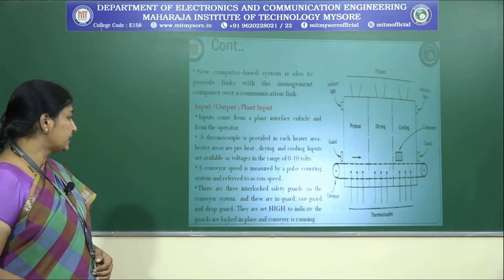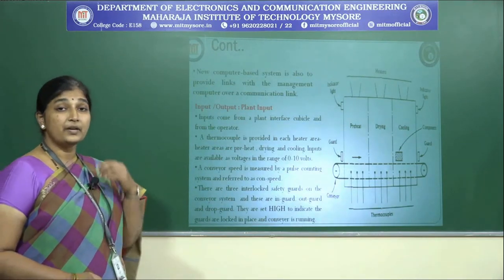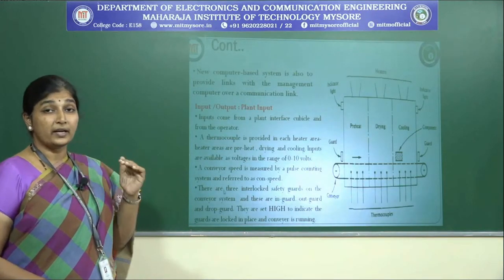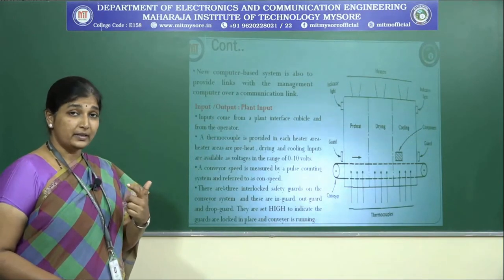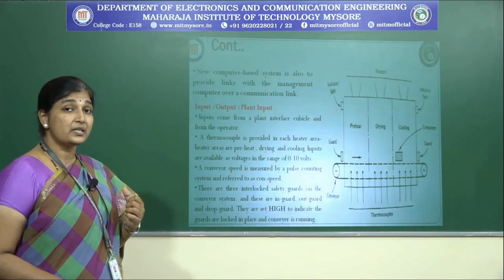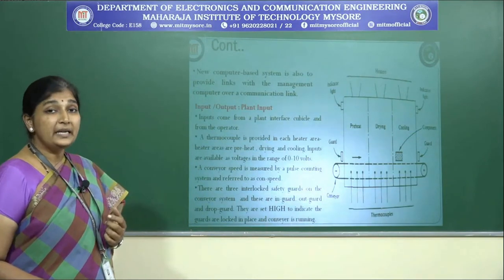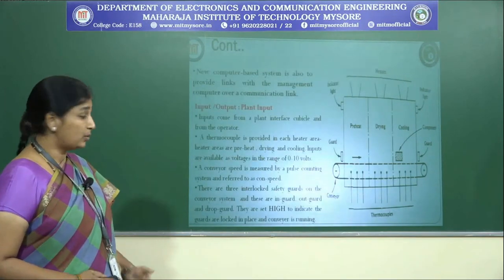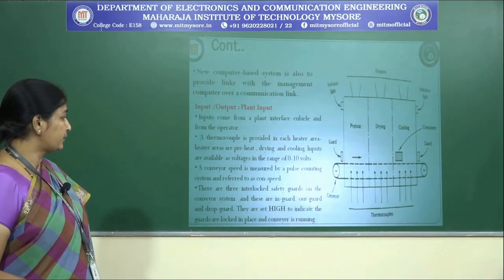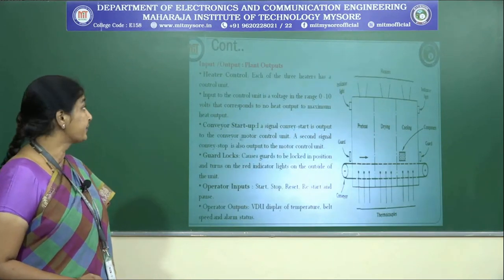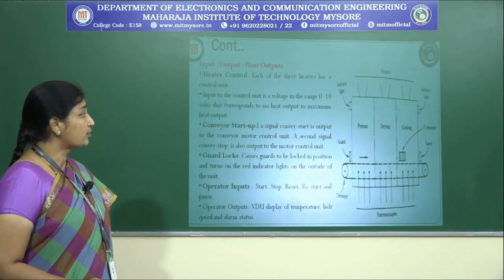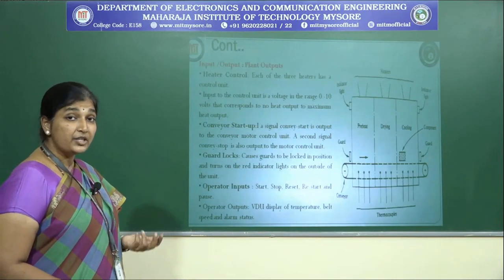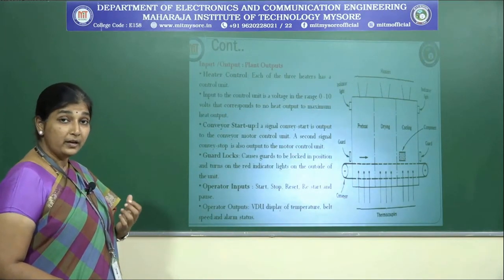The guards are set high to indicate that they are locked, placed, and the conveyor is running. When all three guards are set high, the conveyor belt is running and an indicator turns red. If the signal is low, it means the conveyor belt is not moving. Each of the three heaters has a control unit to control the temperature and voltage. Input to the control unit is a voltage of 0 to 10 volts, corresponding to no heat output to maximum heat output.